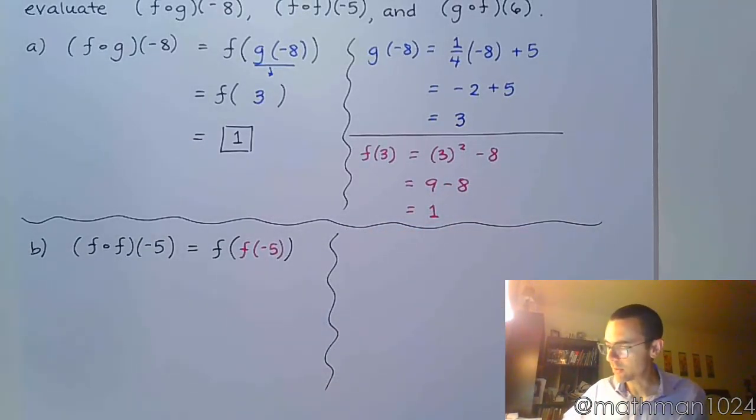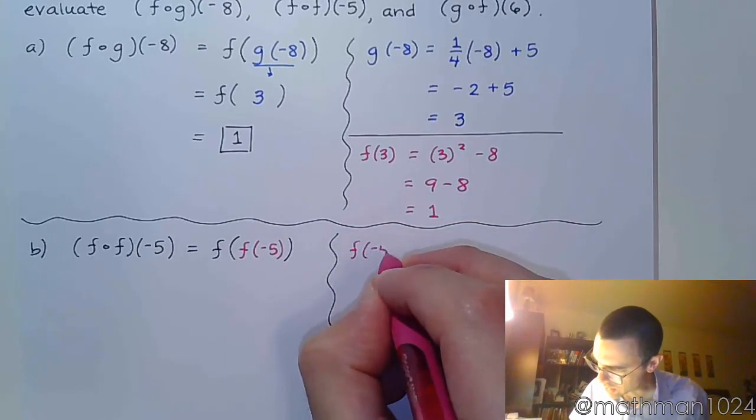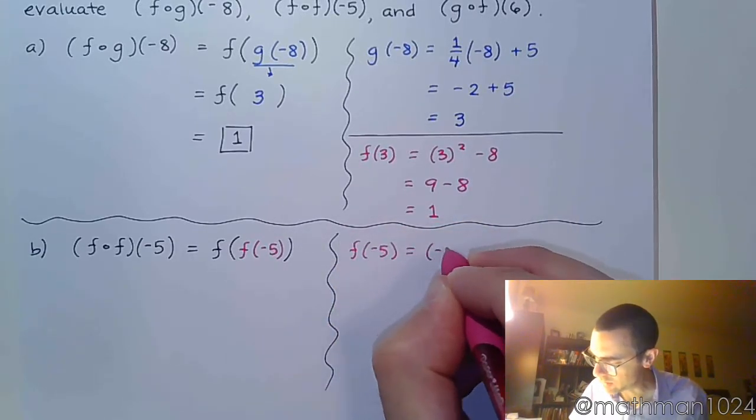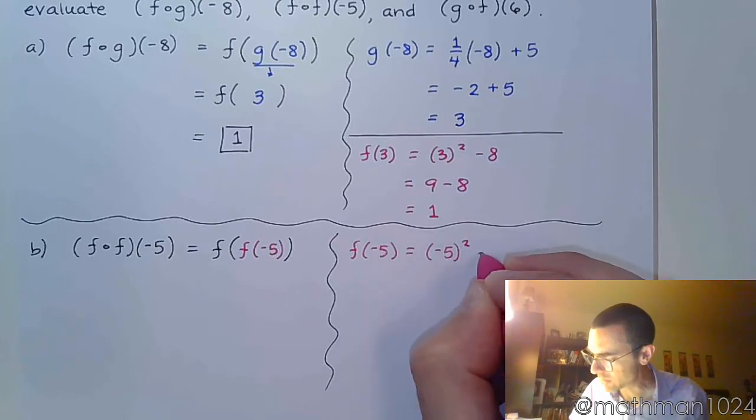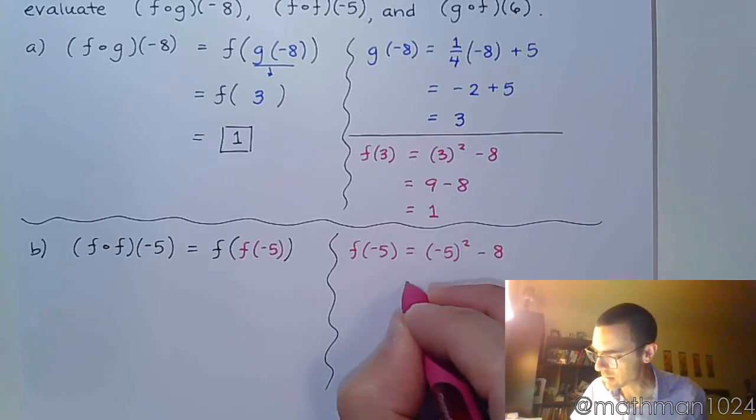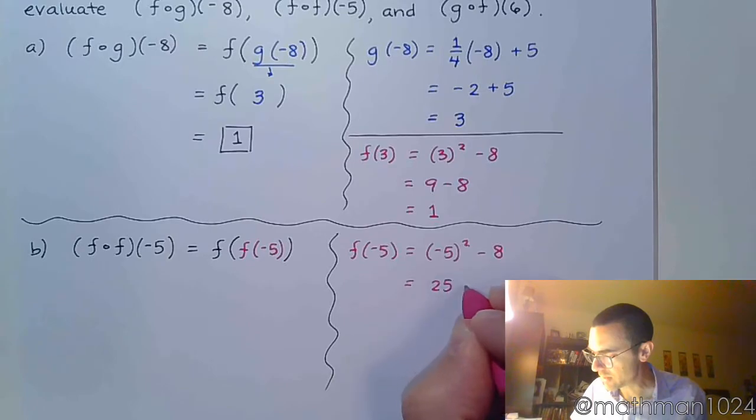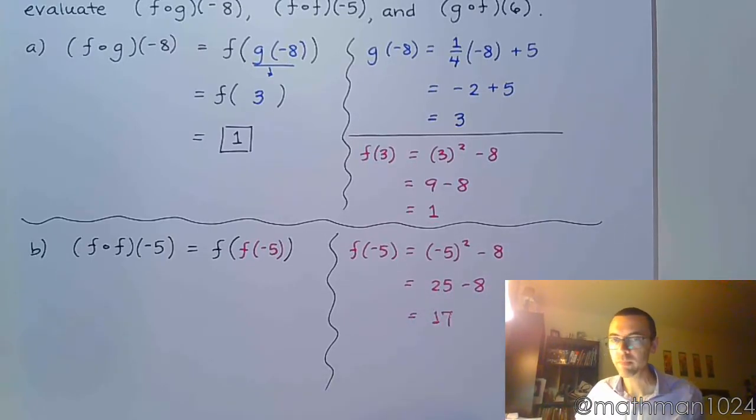Again, we create room off here to the side. So f of negative 5 means negative 5 squared minus 8. So that's 25 minus 8, which equals 17. All right?